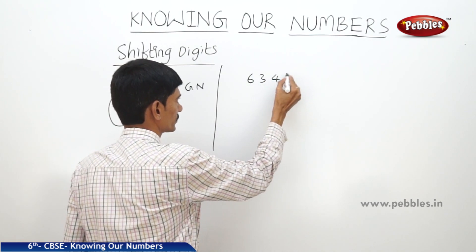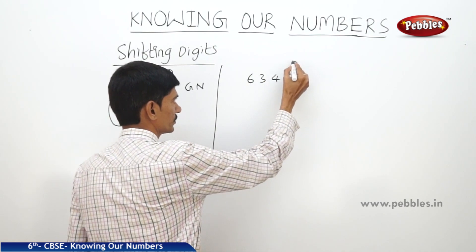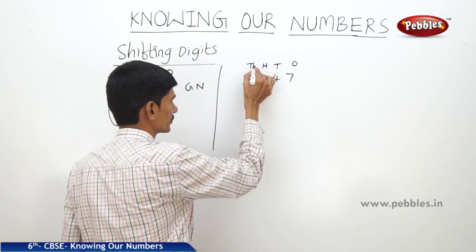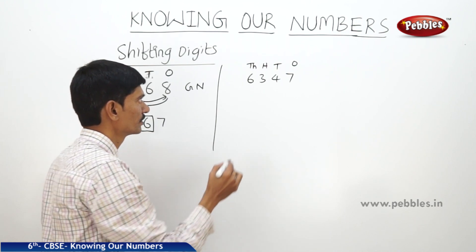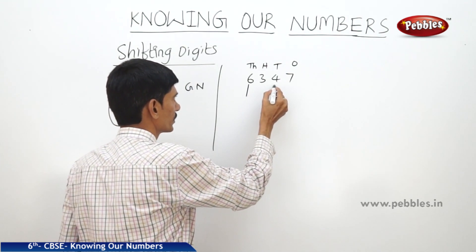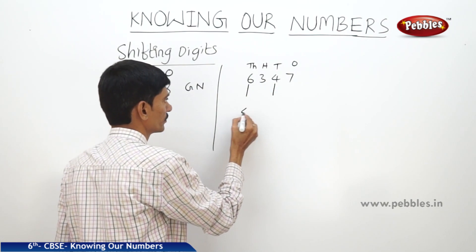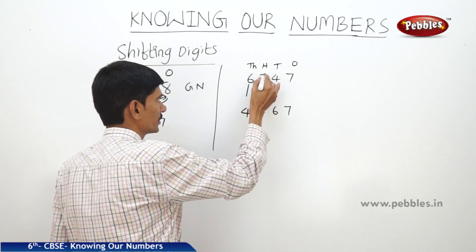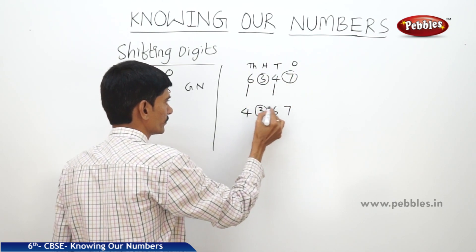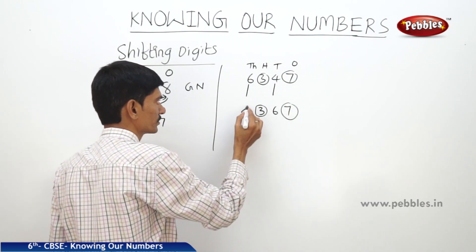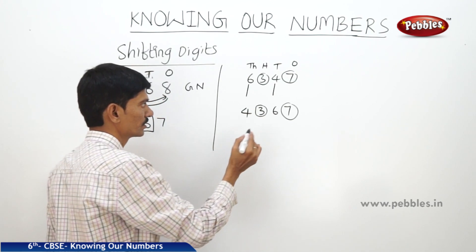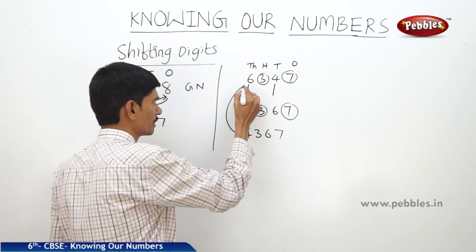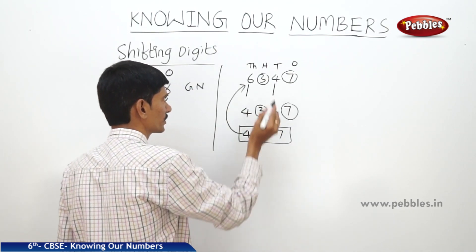Now take another example: 6347. Here the 1s place is 7, 10s place is 4, 100s place is 3, and 1000s place is 6. If you interchange the 1000s place and 10s place, we get another number 4367. The 100s place digit 3 and 1s place digit 7 remain the same — only the 1000s and 10s places are exchanged. Comparing, the obtained number 4367 is smaller than the given number 6347.